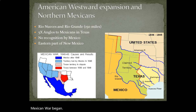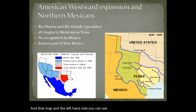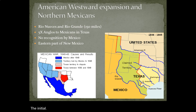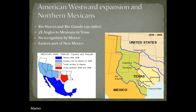Before the actual battles of the US-Mexican War, there is a background, and that background is Texas. The map on the left hand side shows different colors, each representing a period of Texas history. In 1836, Texas declares its independence from Mexico — this is the year of the Alamo. From 1836 to 1845, Texas is considered an independent republic by those living there, but in the eyes of Mexico, Texas is still part of Mexico until the end of the US-Mexican War in 1848.